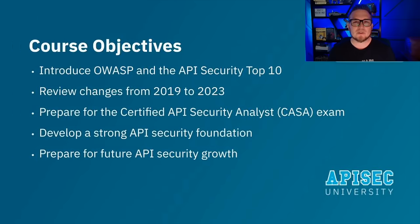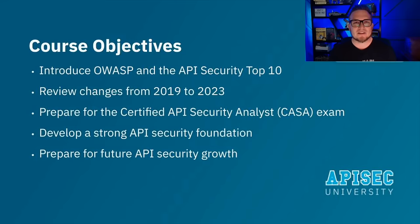The course will develop a strong foundation in the following API security risks: broken object level authorization, broken authentication, broken object property level authorization, unrestricted resource consumption, broken function level authorization, unrestricted access to sensitive business flows, server-side request forgery, security misconfiguration, improper inventory management, and unsafe consumption of APIs. In addition, the course aims to help secure the APIs of the internet, prevent API-related data breaches, and prepare students with additional resources for continued learning and growth.